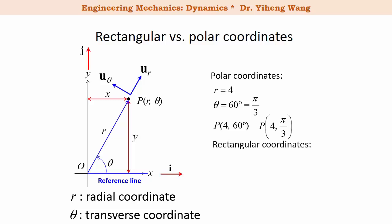For the rectangular coordinates, x equals r cosine theta, which equals 2 in this case, and y equals r sine theta, which equals 2 times the square root of 3 in this case. Therefore the same point represented by the rectangular coordinates is now (2, 2√3).